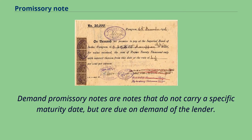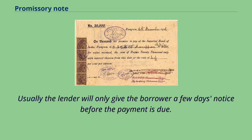Demand promissory notes are notes that do not carry a specific maturity date, but are due on demand of the lender. Usually the lender will only give the borrower a few days' notice before the payment is due.